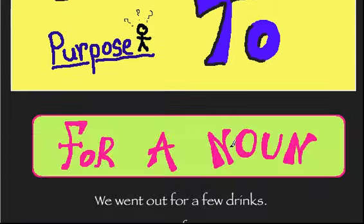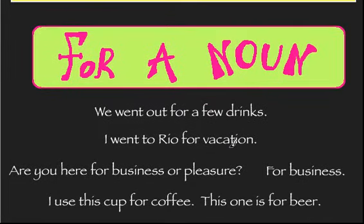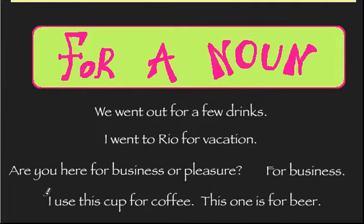There are basically three rules. The first one: we use 'for' with a noun. Here are some examples. We went out for a few drinks — 'drinks' is a noun. I went to Rio for vacation. Are you here for business or pleasure? 'For business' — because it's a noun. And I use this cup for coffee and this one for beer. Pretty easy — 'for' is used with a noun.